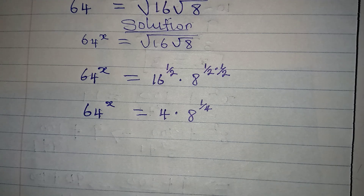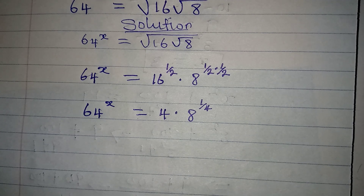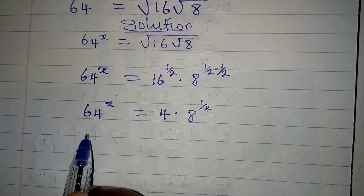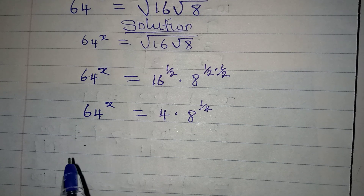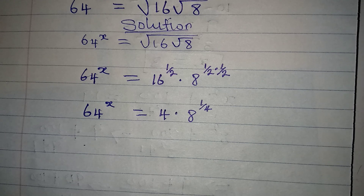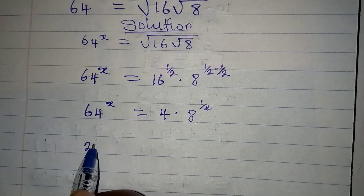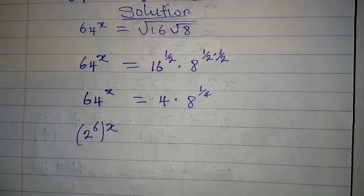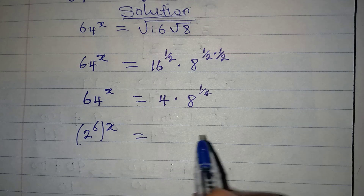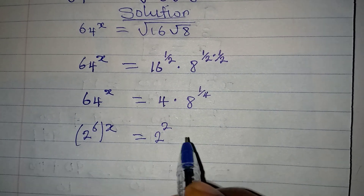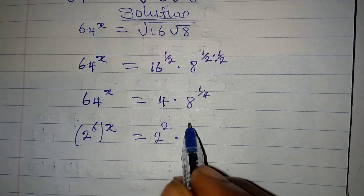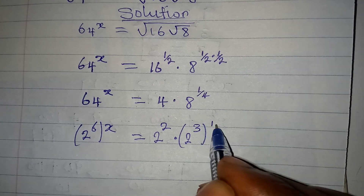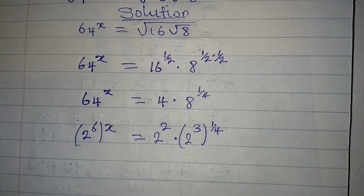We're not yet having the same base on the right. We want the same base throughout. 64 is the same as 2 multiplied six times, so it's 2 to the power of 6. So we have 2 to the power of 6 to the power of x on the left, which should equal, on the right, 2 to the power of 2 — that's 4 — multiplied by 8, which is 2 to the power of 3, with 1 over 4 on the outside.